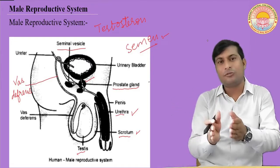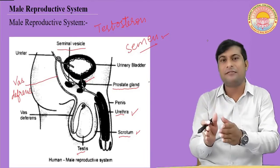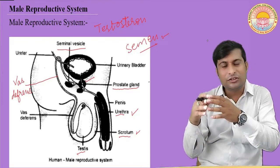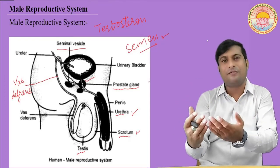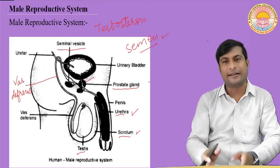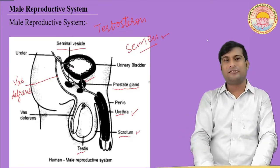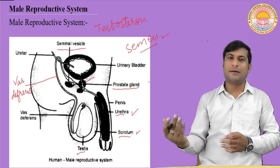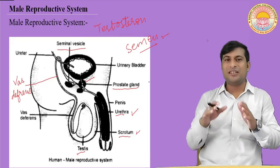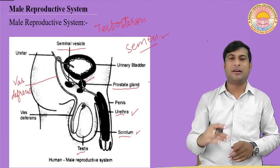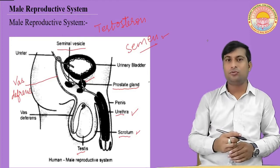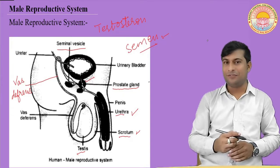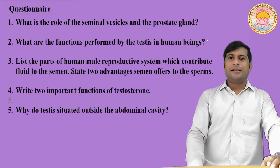At the site of fertilization, sperm travel through the penis, vagina, and cervix. This completes the male reproductive system. The female reproductive system will be discussed in the next video. I hope you are enjoying this video. Now it's time for the questionnaire on this topic — here there are five questions.